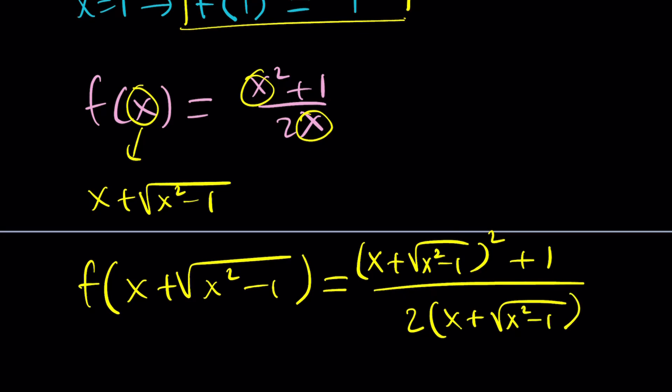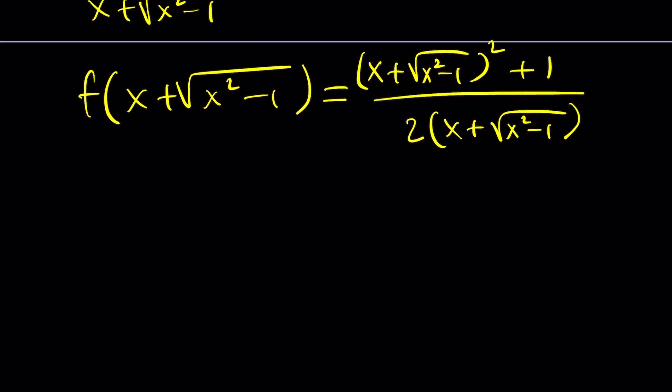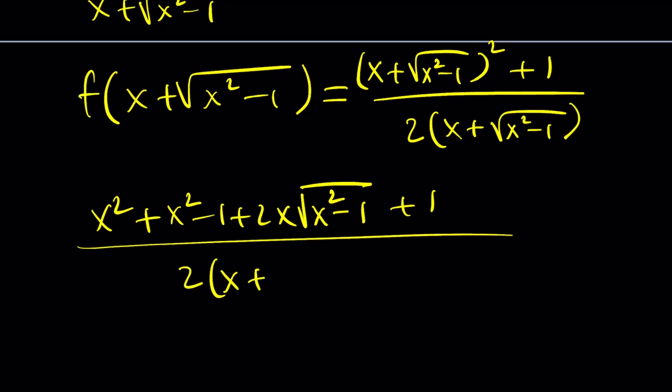You're going to get this squared plus 1 divided by 2 times that expression. What am I supposed to get from here? I'm supposed to get x, right? Square the first expression, you're going to get x squared plus, if you square the radical, and then 2 times that, 2ab, and then plus 1 on the outside, divided by 2 times this. Let's leave it like that.